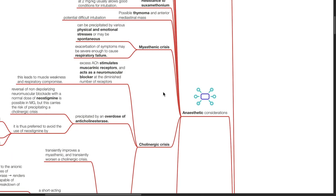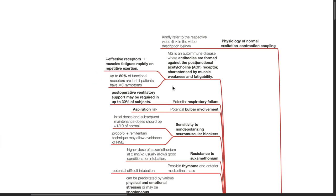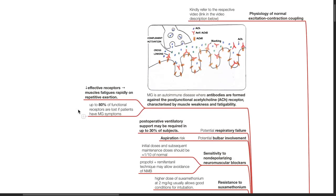With regards to myasthenia gravis anesthetic considerations. MG is an autoimmune disease where antibodies are formed against the post-junctional acetylcholine receptor characterized by muscle weakness and fatigability. A reduction in effective receptors results in easy fatigability of muscles with repetitive exertion. Up to 80% of functional receptors are lost if patients have myasthenia gravis symptoms.